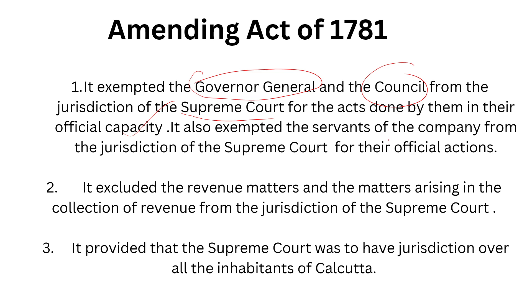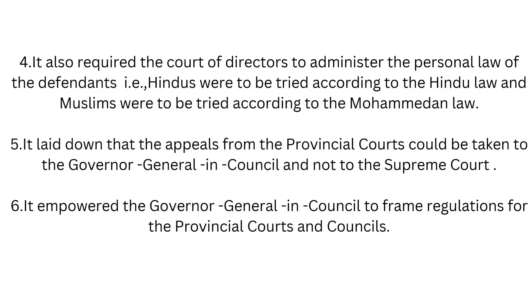It also exempted the servants of the company from the jurisdiction of the Supreme Court for their official actions. So the Governor General, the Council, and the company's servants — for work done in their official capacity — were exempted from the Supreme Court's jurisdiction. Second important point: it excluded revenue matters and matters arising in the collection of revenue from the jurisdiction of the Supreme Court. Third point: it provided that the Supreme Court was to have jurisdiction over the inhabitants of Calcutta. It also required the Court of Directors to administer the personal law of the defendants.